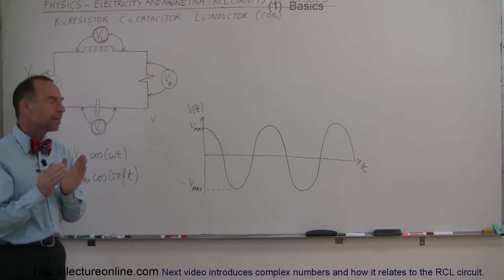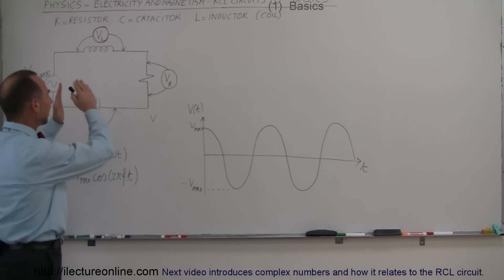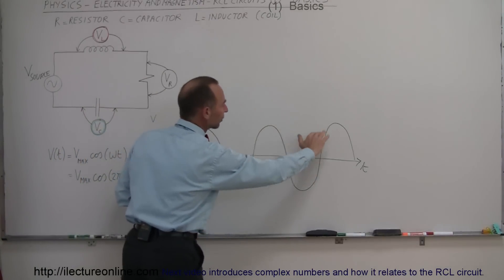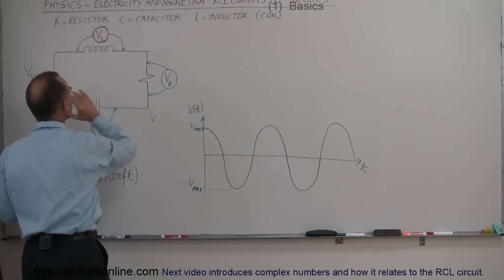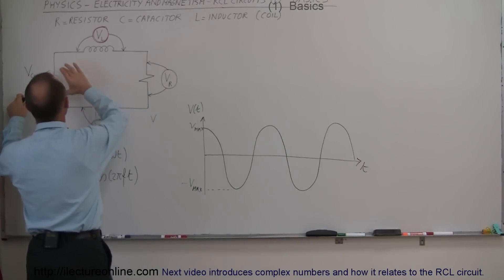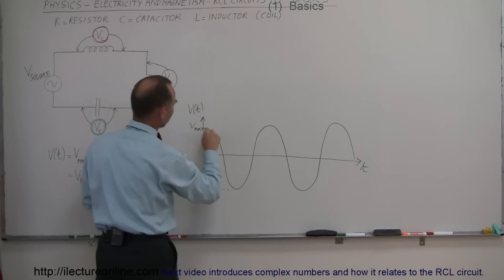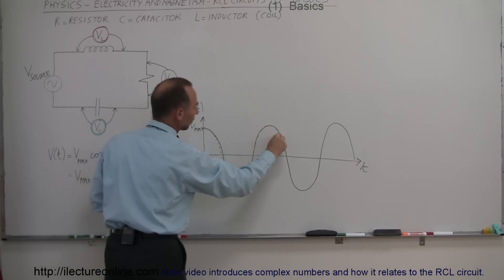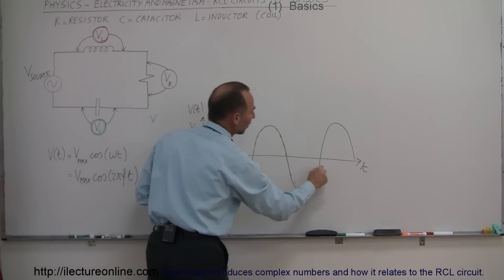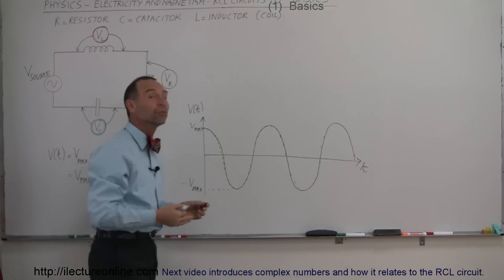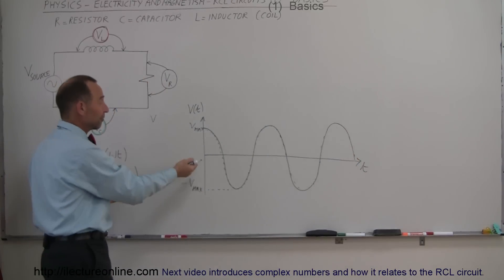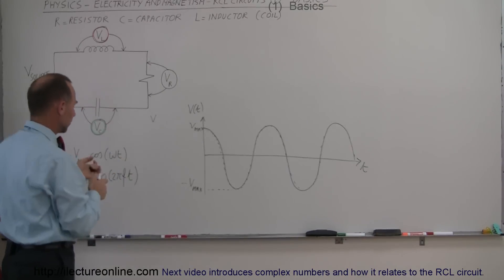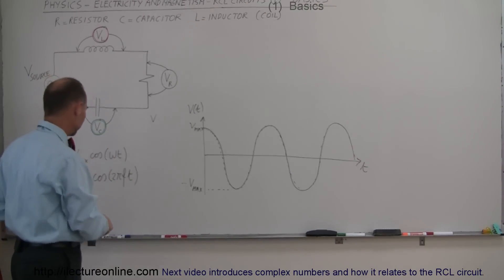The first thing we need to understand is how the phase difference works in a circuit like this. Here I have drawn how the voltage varies over time from the source, and it turns out that the resistor is always in phase with the source. So the voltage across the resistor will also reach its maximum at the very same time — they are in phase. If I draw a dotted line here, that would represent the voltage across the resistor. The amount of voltage across the resistor can be different depending on the size of the other components in the circuit.